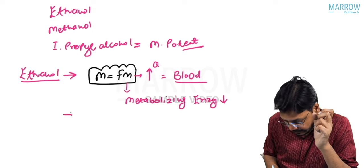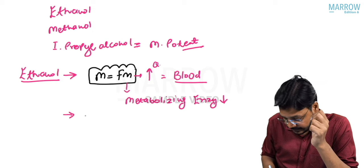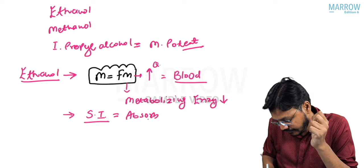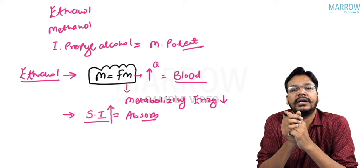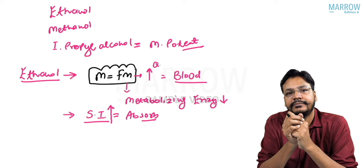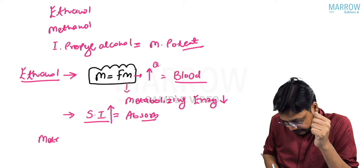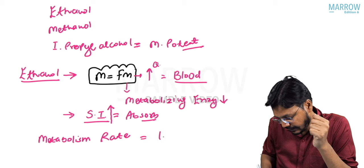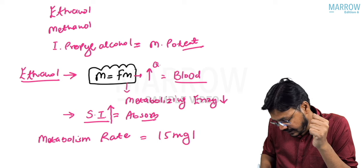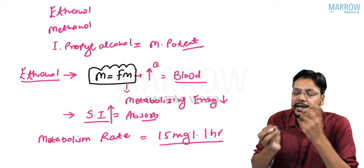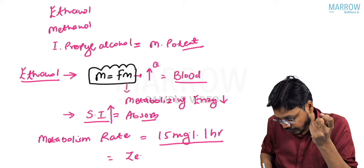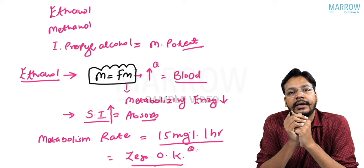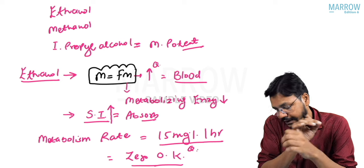Very important concept. Ethanol is maximum absorbed from the small intestine — about 80%. The metabolism rate of ethanol is 15 milligram percentage per hour. Everyone knows that ethanol follows zero-order kinetics.